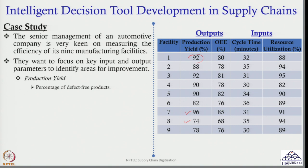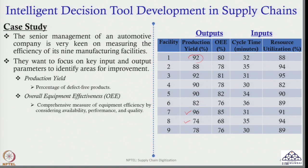Facility 8 has only 74% production yield. The next parameter is OEE, that is Overall Equipment Effectiveness — a comprehensive measure of equipment efficiency considering availability, performance and quality. Facility 1 has 80% OEE, facility 2 has 78% OEE. Facility 7 has the maximum OEE of 85%, whereas facility 8 has the lowest at 68%.